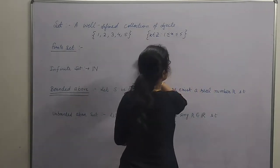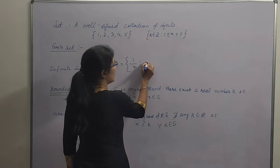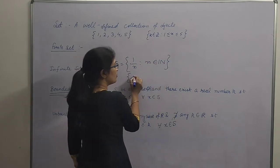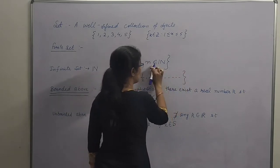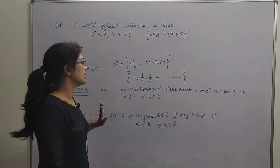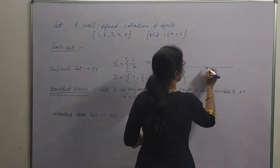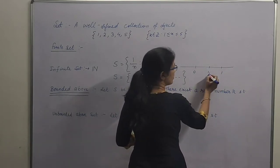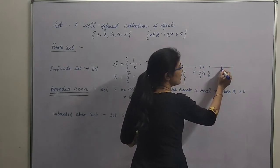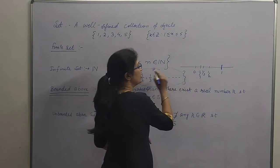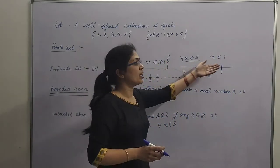Ab aisa nahi hai ki sirf finite sets hi bounded above hoti hain — infinite sets bhi bounded above ho sakti hain. Like, set S = {1/n} where n belongs to natural numbers. Pahli baat, is set mein elements kya hain? n=1 → 1, n=2 → 1/2, n=3 → 1/3, 1/4, and so on. So this is an infinite set. Is this set bounded above? Yes. Ye elements number line pe: 1, 1/2, 1/3, 1/4 — they are going near to 0. But every number of this set is less than or equal to 1. Therefore, this set is bounded above by 1.